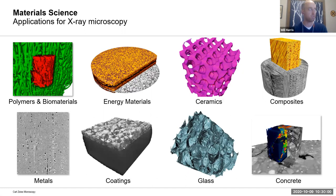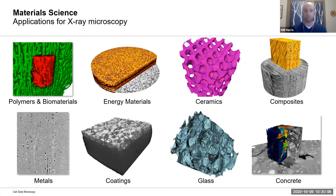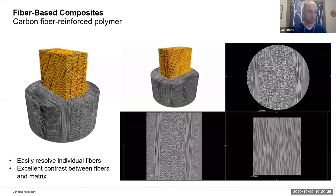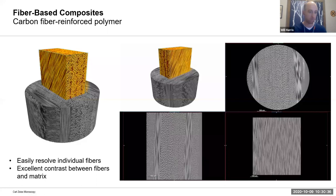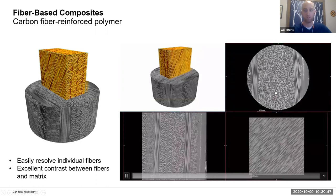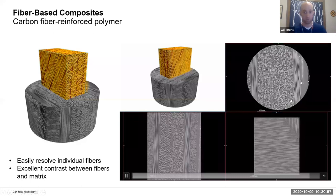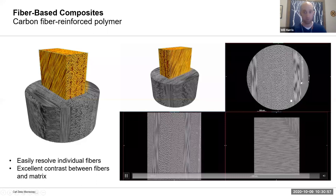Starting with an overview from the material science and engineering world — it's kind of everything under the sun. The commonality is: if there's three-dimensional structure or morphology related to either the processing or performance of the material, it's probably a good candidate for x-ray microscopy. One very obvious case is fiber composites, where the failure mechanisms are very different from classic metals — you have this explicit fiber structure where at the individual fiber level you can get breakage, pull-out, and fracture propagating across different plies or layers.